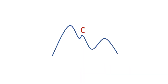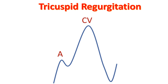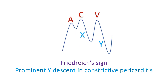The C wave in jugular venous pulse is a carotid artefact. In the right atrial pressure tracing, it is due to bulging of the tricuspid valve into the right atrium during isovolumic contraction. The V wave occurs during venous filling after ventricular contraction. In tricuspid regurgitation, C and V waves fuse to form a prominent CV wave, also called a prominent V wave. X descent is absent in tricuspid regurgitation. Y descent can be prominent in constrictive pericarditis and is known as Friedreich's sign. Y descent is shallow in tricuspid stenosis. In cardiac tamponade, the Y descent is absent.